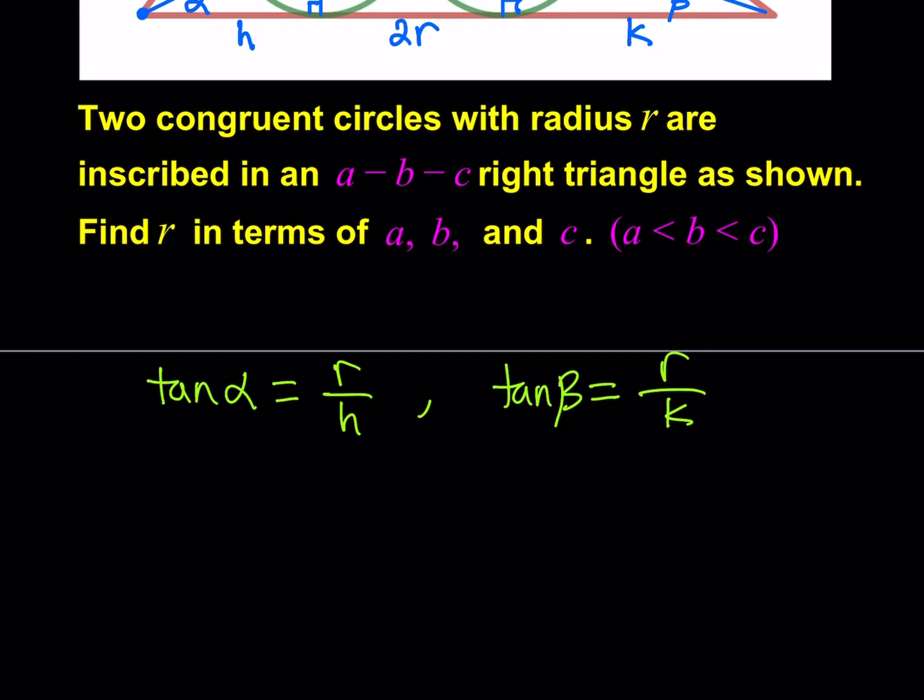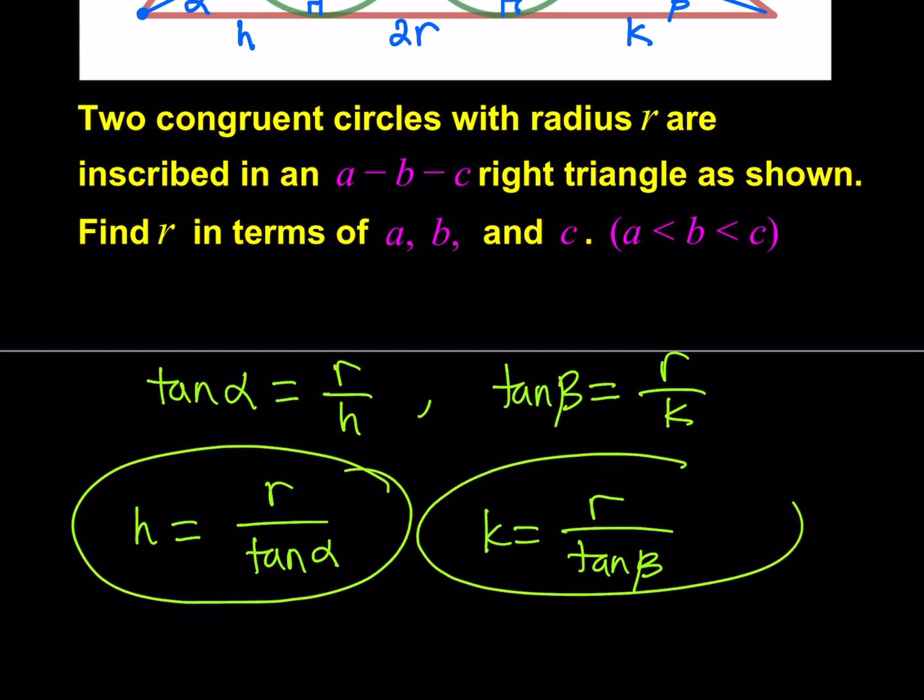Now, from here, I should be getting something helpful. And I'd like to isolate the H. So H is going to equal R over tangent alpha. And K is going to equal R over tangent beta. Now, we're going to use these equations. But first, we have to do more work.